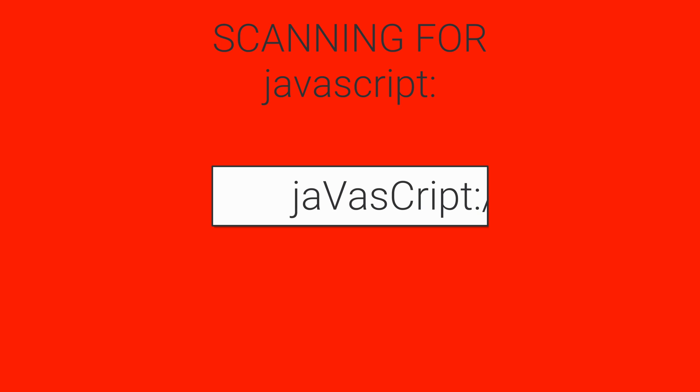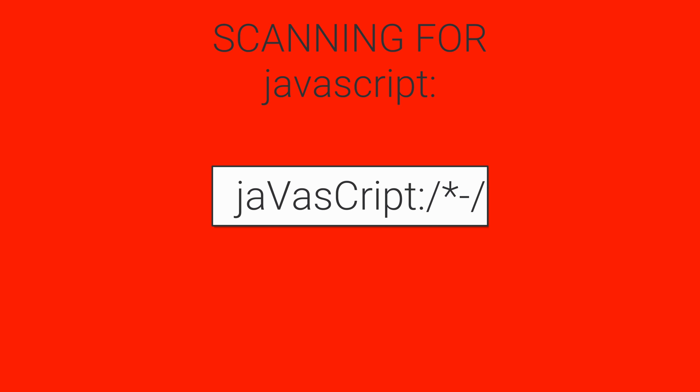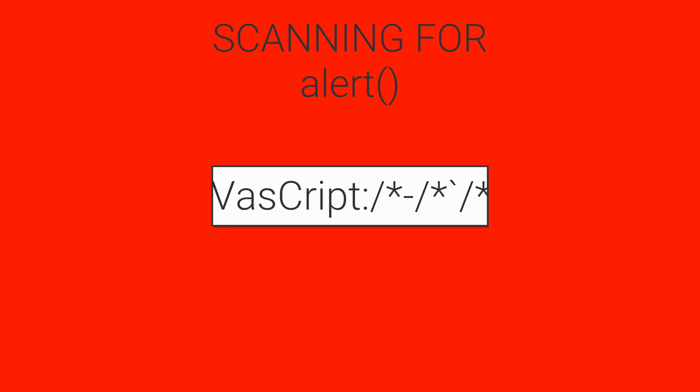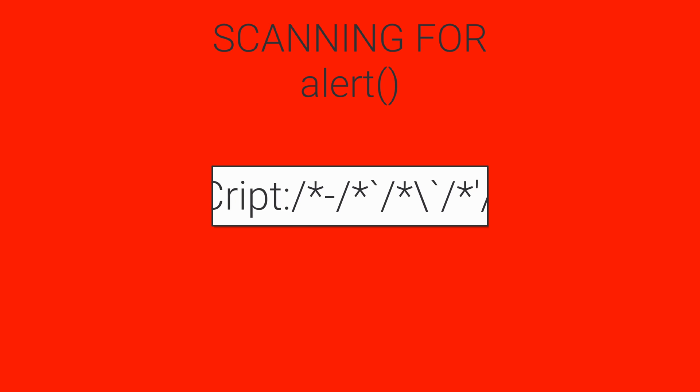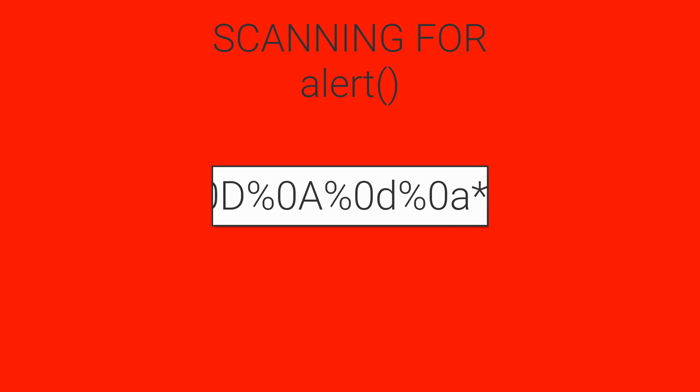Now let's move on and scan the polyglot again for the URL context. Up front, we already see the JavaScript scheme is being used with mixed capitalization to bypass filters. Since we know we're in a JavaScript URL, everything else is going to be treated as JavaScript. Next, a block comment is being opened, so let's just jump to where it closes so we can get to the actual part of the code that gets run.